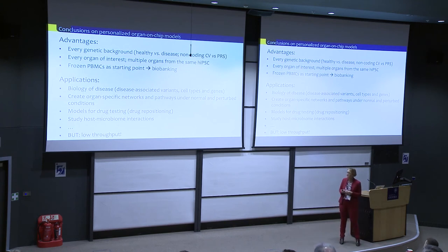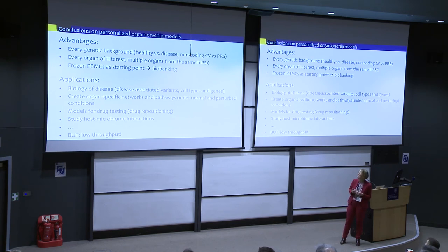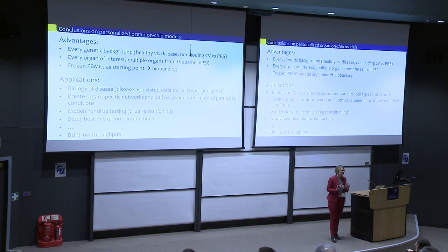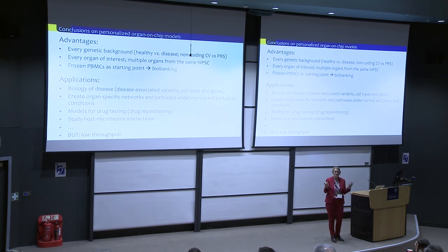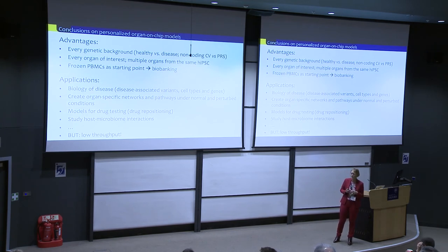What are the advantages? You can use any genetic background you're interested in — from a healthy person, a diseased person, or somebody with elevated genetic risk. You can in principle make every organ of interest and make multiple organs from the same individual. For the far future it would be very interesting to couple all different organs together — for example, since there is a very strong gut-brain axis, maybe we can couple it to the brain on the chip, although we're not there yet. Frozen PBMCs are a very good starting point and something we can think about collecting in a much broader sense.